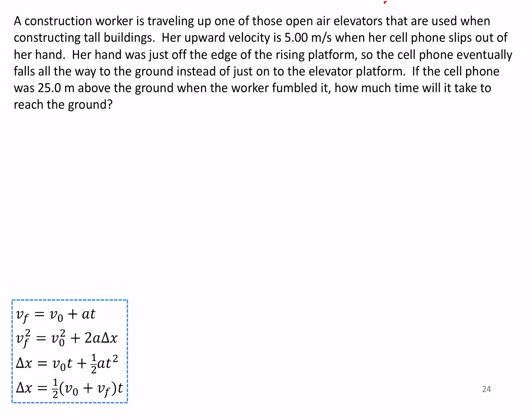Now in this one we've got a construction worker going up one of those open-air elevators that you see attached to the outside of incomplete tall buildings, and she's going upwards as is the elevator at five meters per second when her cell phone slips out of her hand. Clearly this upward velocity is going to be important in some way. Her hand was just off the edge of the rising platform.